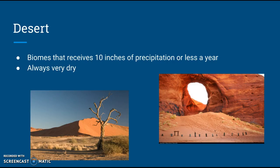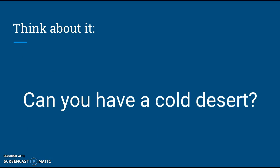Next, we're going to be talking about the desert, and the desert is always very dry. They're going to get less than 10 inches of precipitation a year. So if you have a place that's not getting very much water, there is obviously going to be not as much growth compared to the tropical rainforest where there's tons of rain. This is going to have almost no rain, so the plant life that lives there must be able to survive with little water. And knowing that it's always dry and doesn't get much water — can you have a cold desert? Think about that. It has to be dry and can't have a lot of rain, so can you have a cold desert?